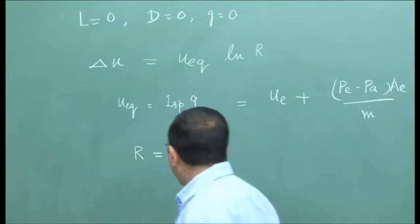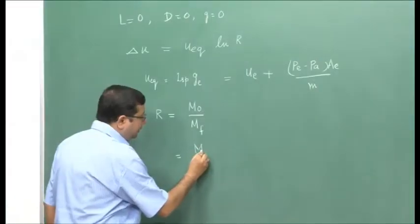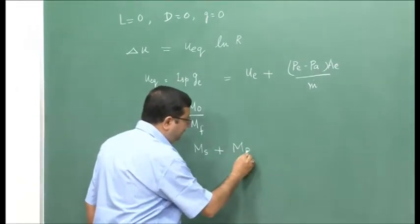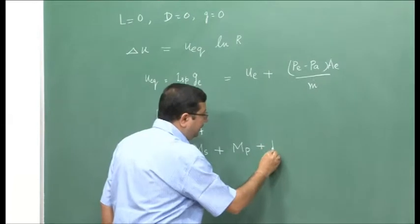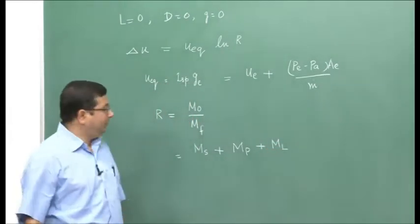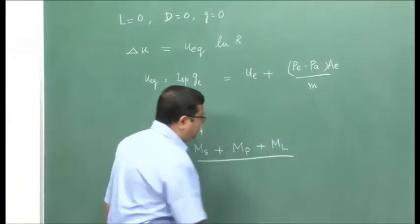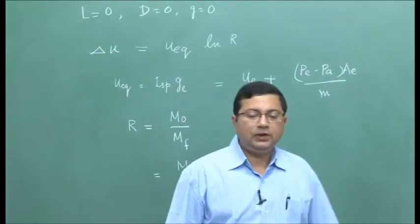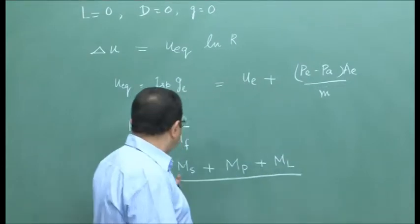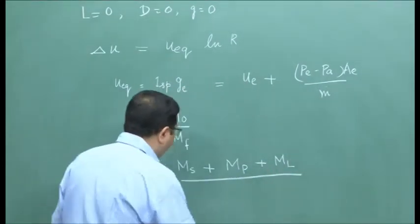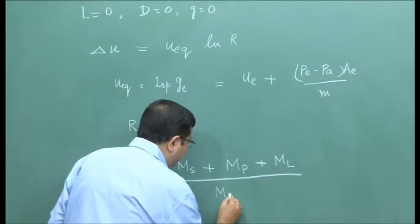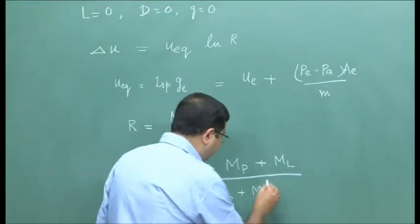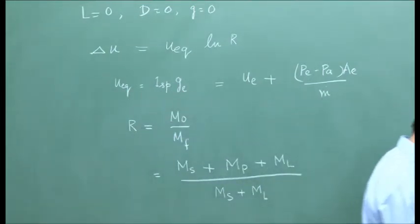The initial mass includes the structural mass m_s, the propellant mass m_p, and the payload mass m_l. The final mass is what remains after the propellant is used up as the rocket operates. Therefore, only the structural mass and the payload mass remain, so the final mass is m_s plus m_l. This is something we had already discussed.